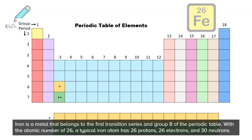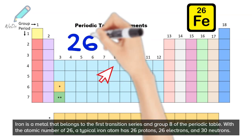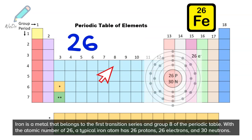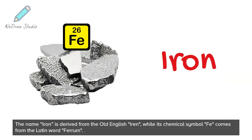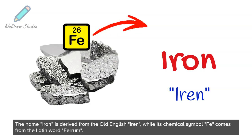Iron is a metal that belongs to the first transition series and group 8 of the periodic table. With the atomic number of 26, a typical iron atom has 26 protons, 26 electrons, and 30 neutrons. The name iron is derived from the Old English iron, while its chemical symbol Fe comes from the Latin word ferrum.